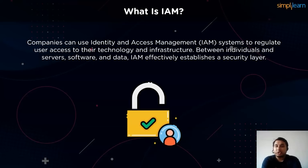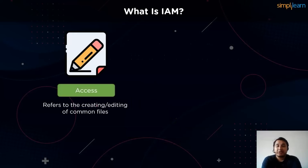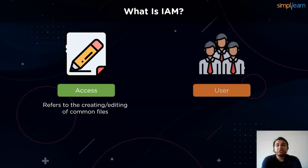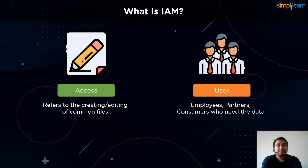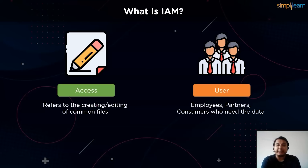Access and user are two vital IAM concepts. Access refers to the actions permitted to be done by a user, like view, create or change a file. Users could be employees, partners, suppliers, contractors or even customers. Furthermore, employees can be further segmented based on their roles. IAM systems are designed to perform three key tasks: identify, authenticate and authorize.